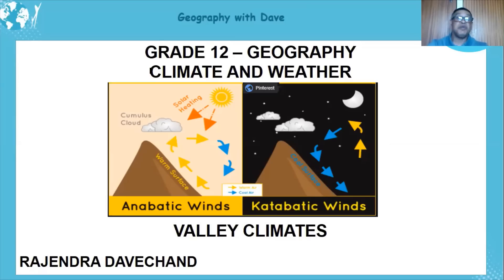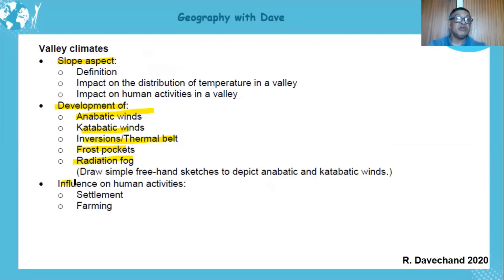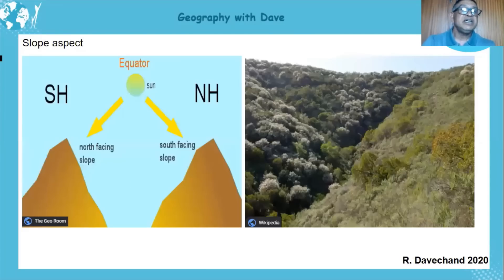Hello learners, today we're covering climate and weather, and our main focus is valley climates. The curriculum states that we will look at slope aspect, development of anabatic and catabatic winds, inversions or thermal belt, frost pockets, and radiation fog. We're going to look at simple sketches to get a better understanding of these concepts, and then look at the influence on human activities.